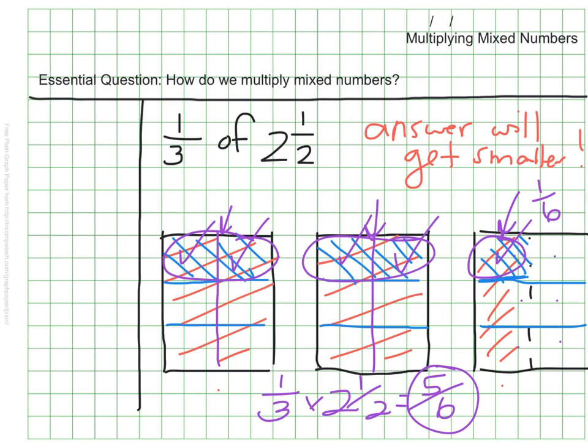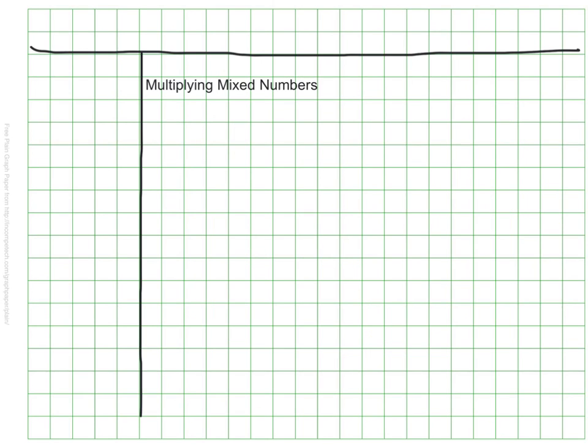This strategy works and it's a good way to model our answer, but it seems really long and can be pretty cumbersome. So let's look at a different way. It's the way I prefer, and that is using the algorithm. If we have a mixed number or two mixed numbers, we can follow almost the same steps we do for multiplying regular fractions. There's just one step we have to do first, and that is to turn our mixed numbers into improper fractions.